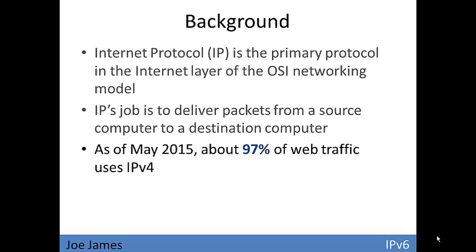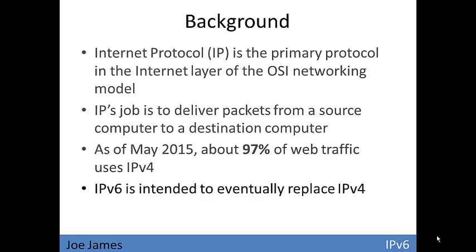As of May 2015, about 97% of web traffic is still using IP version 4, so only about 3% of web traffic currently uses IP version 6. IP version 5 was never put into mainstream usage, so it was skipped over. The transition to IP version 6 has been a very long, slow, gradual one because the standard was launched in 1999, but it is intended to eventually replace IP version 4.